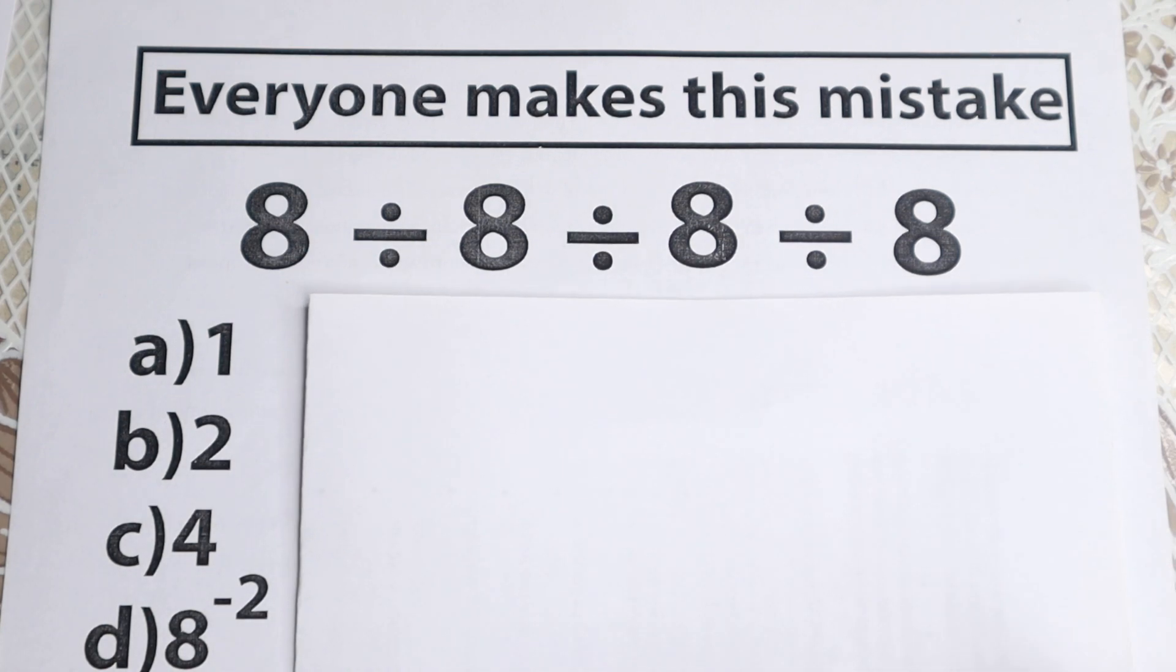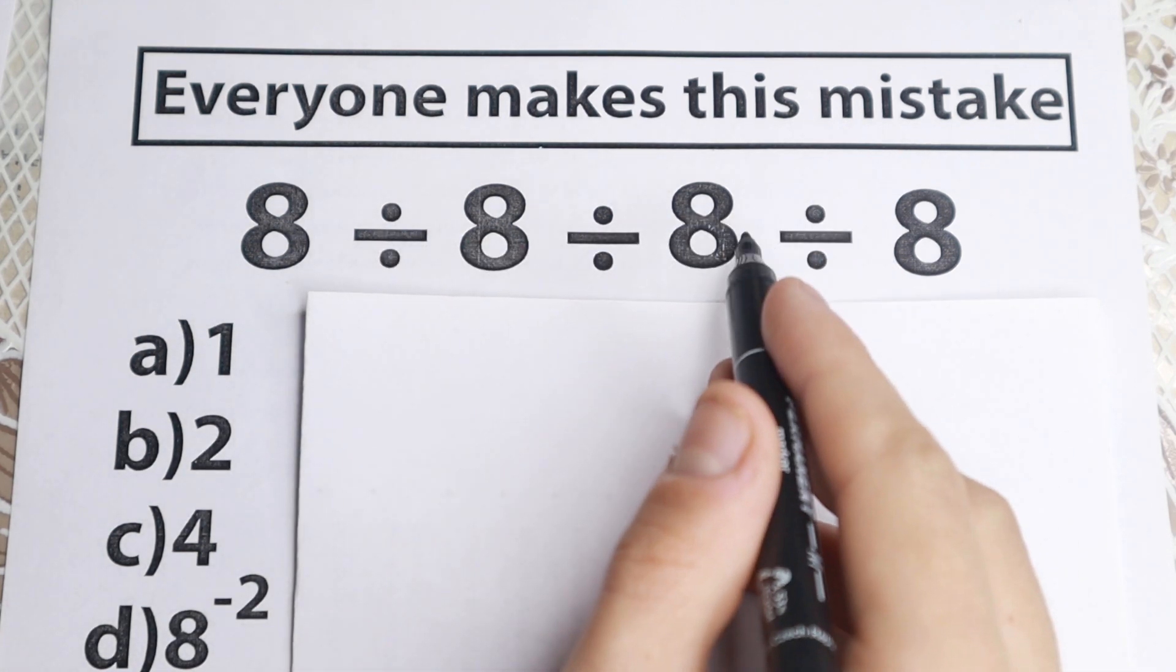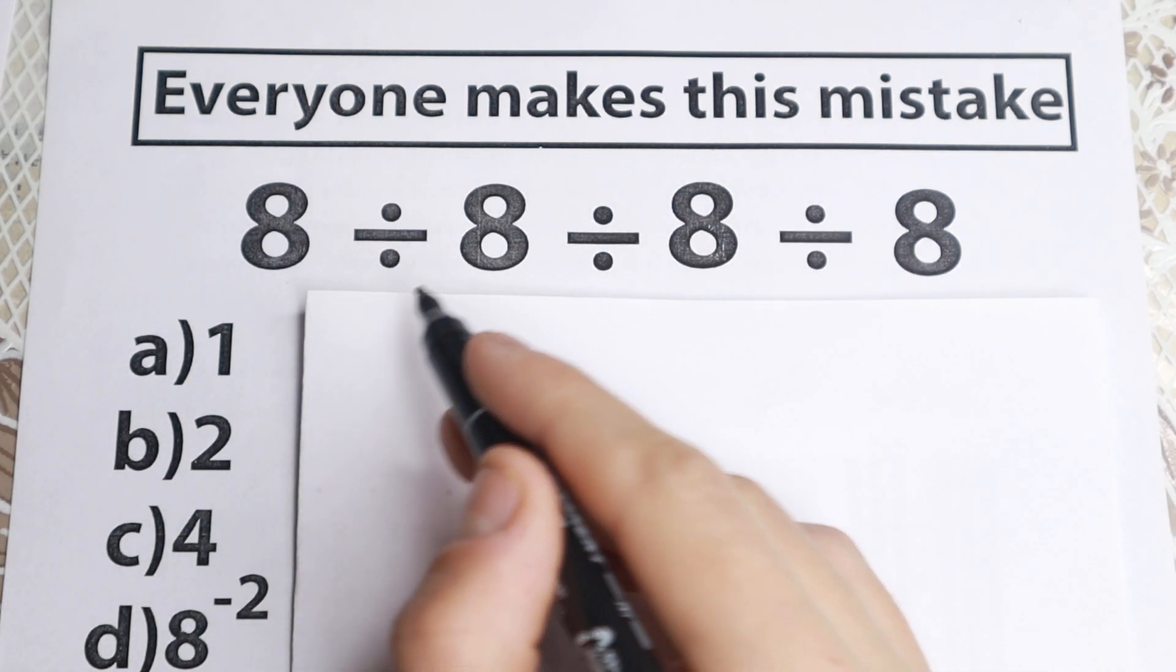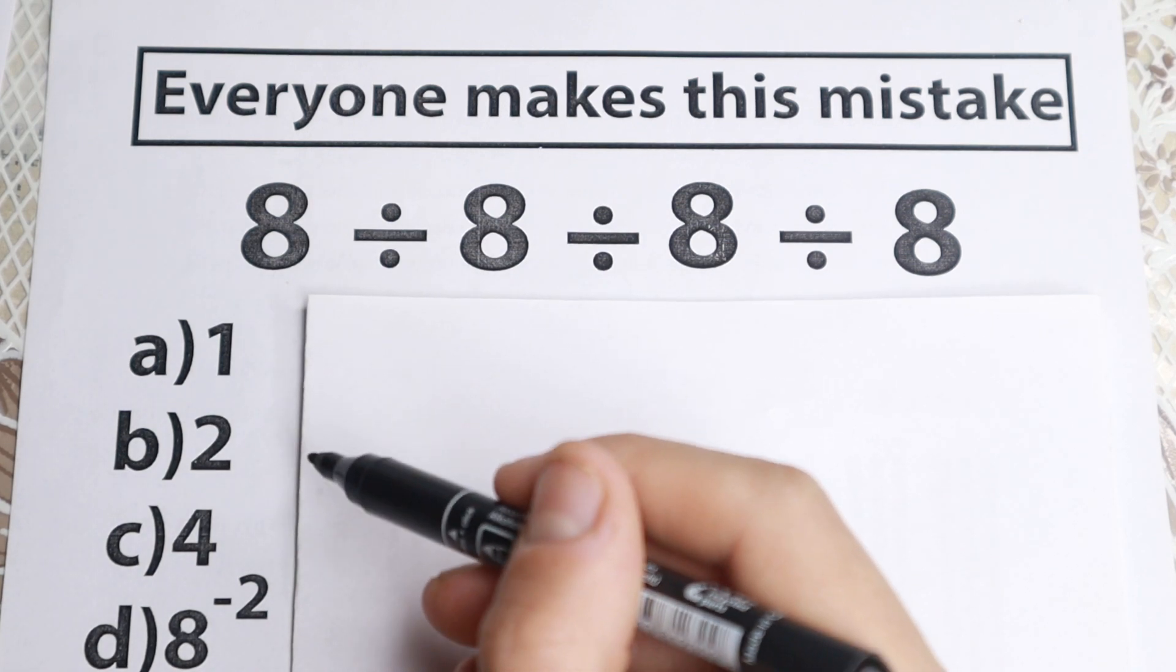So what is the problem? We have 8 dividing by 8, dividing by 8, and dividing by 8. So very simple problem. No squares, no cubes, no fourth power, no parentheses right here. And of course right here we have a lot of options A, B, C and D.